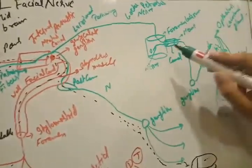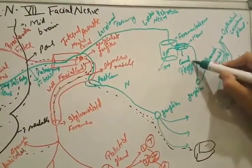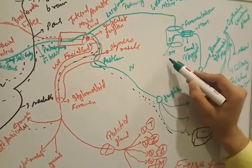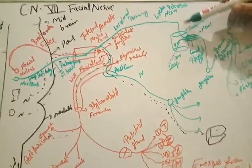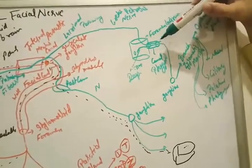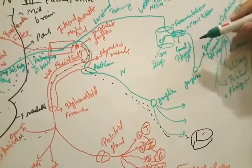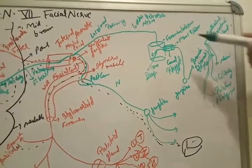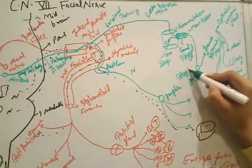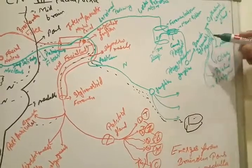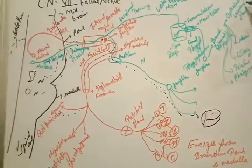The greater petrosal nerve enters the foramen lacerum and then passes into the pterygoid canal. In the foramen lacerum, a branch from the internal carotid artery called the deep petrosal nerve is located. When the deep petrosal nerve and the greater petrosal nerve join together inside the pterygoid canal, this communicating nerve is called the vidian nerve (VDN nerve). They then enter the pterygopalatine ganglion.